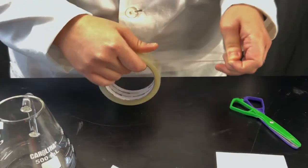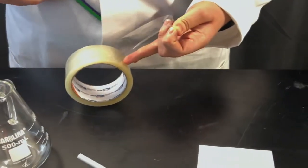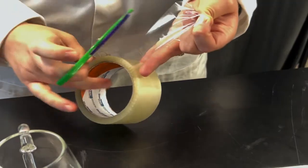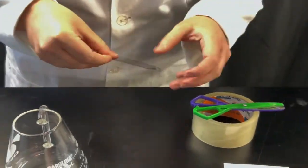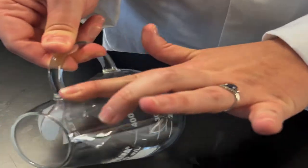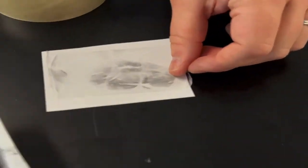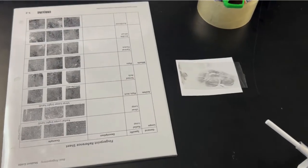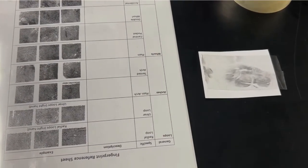To lift the print from the surface, first obtain a piece of fingerprint lifting tape longer on both sides than the length of the prints being lifted. Now place and secure the lifting tape on the developed prints. Gently pull the tape up from one side and place the tape down on a collection card. The print can now be documented and analyzed to identify fingerprint patterns.